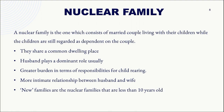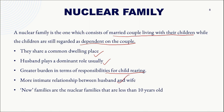A nuclear family consists of a married couple living with their children while the children are still dependent on the couple. They share a common dwelling. The husband usually plays a dominant role, and there is a greater burden of child-rearing responsibility. More intimate relationships between husband and wife are seen in nuclear families. New families — those less than 10 years old — are also considered nuclear families.